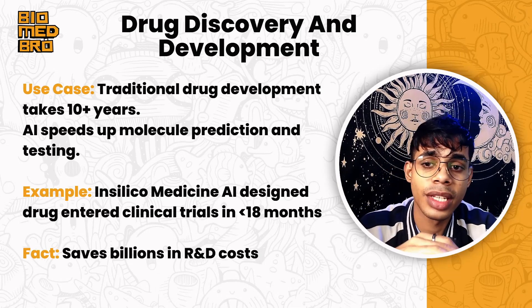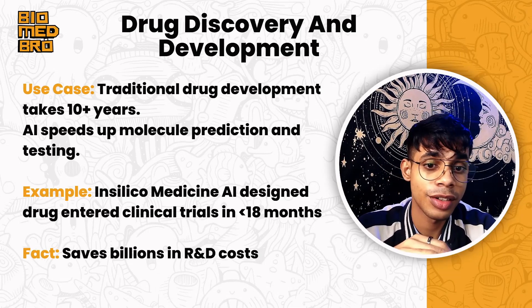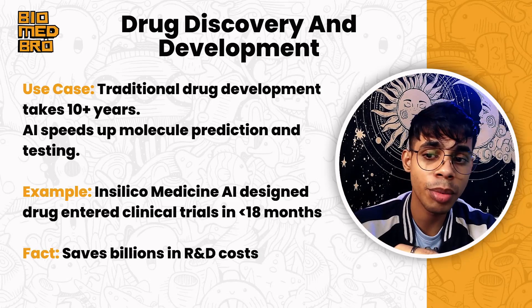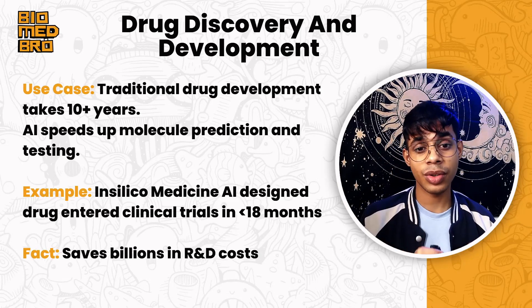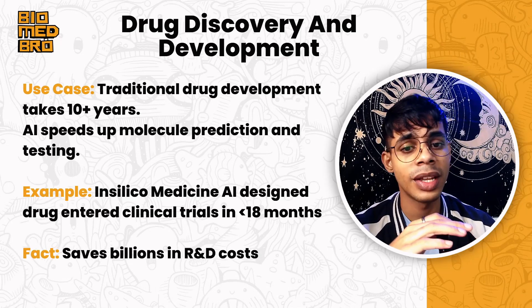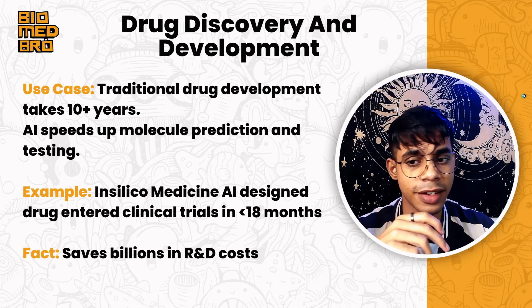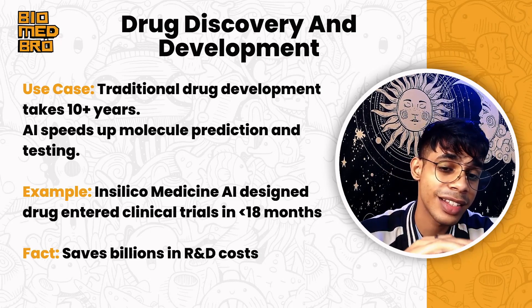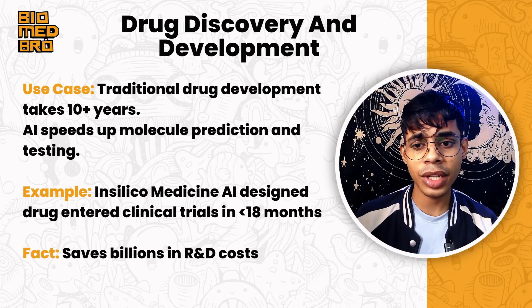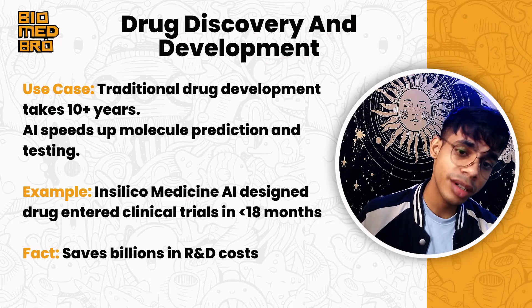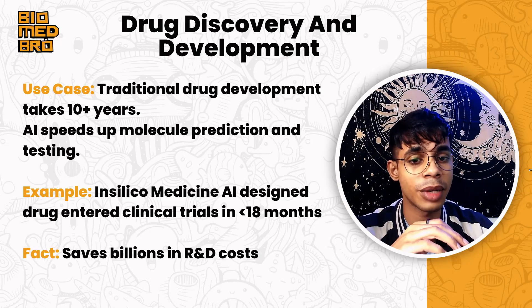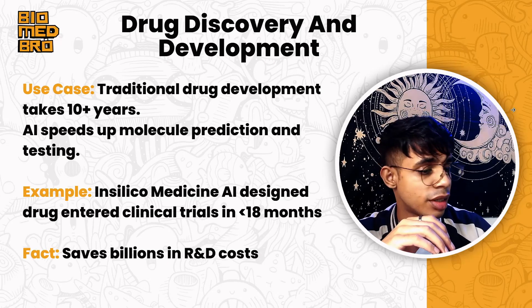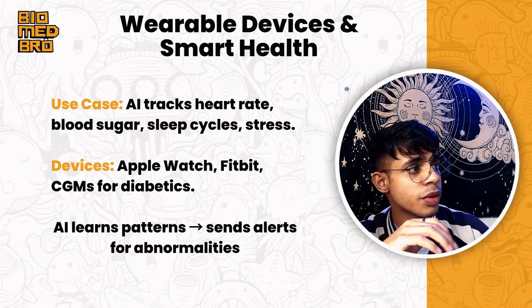Drug discovery and development: traditional drug development used to take 10-plus years — developing, testing, and going through trials. Using AI, it is speeding up molecule prediction and testing, so a process that took 10 years may now take only five to seven years. An example is Insilico Medicine AI, which designed a drug and entered clinical trials in less than 18 months — saving billions of dollars in research and development.